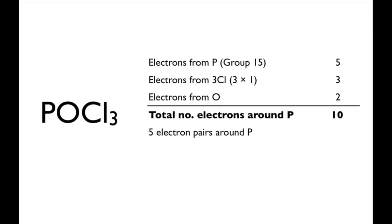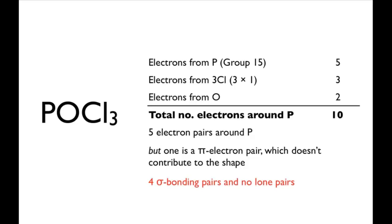One of these electron pairs is a pi electron pair, so it doesn't contribute to the shape of the molecule. This leaves four sigma electron pairs, all of which are bonding pairs.